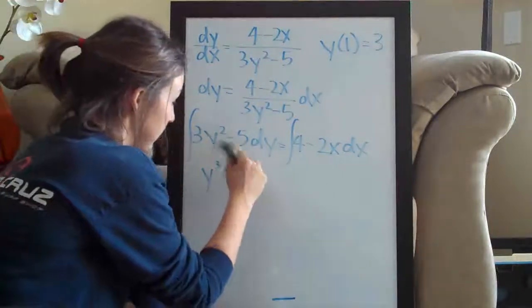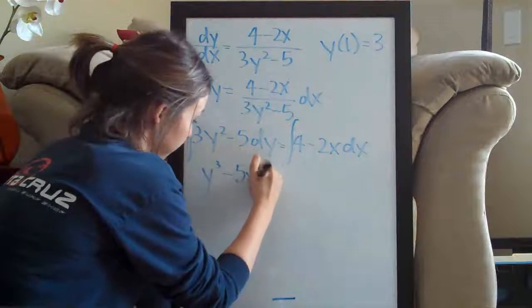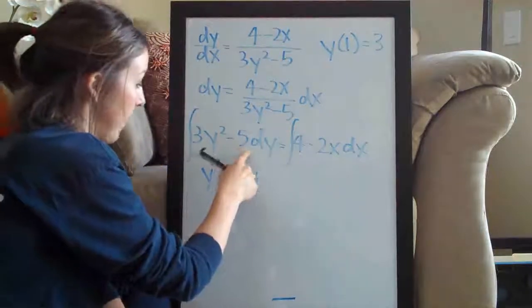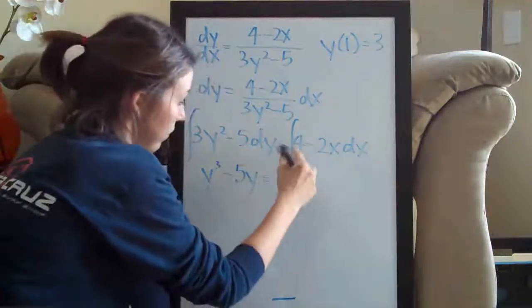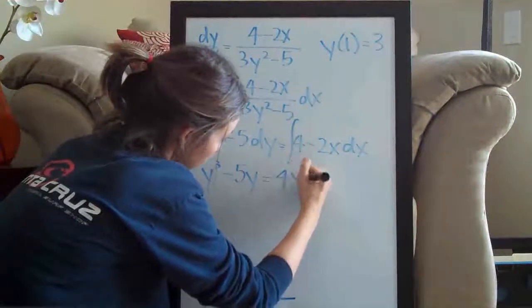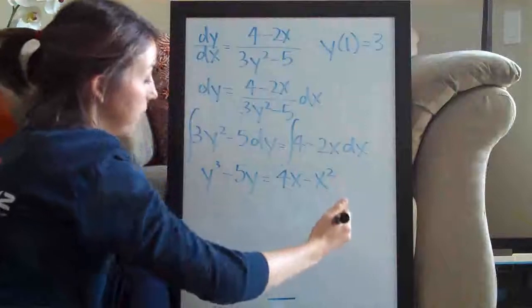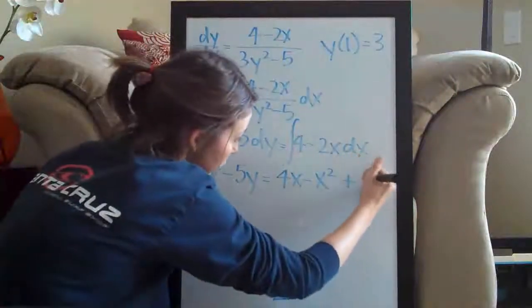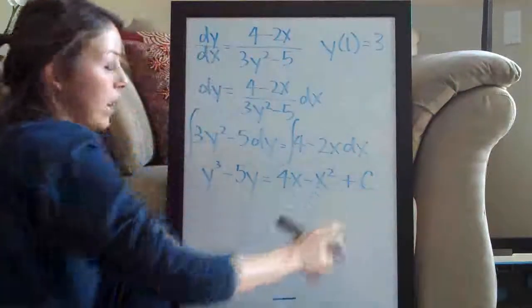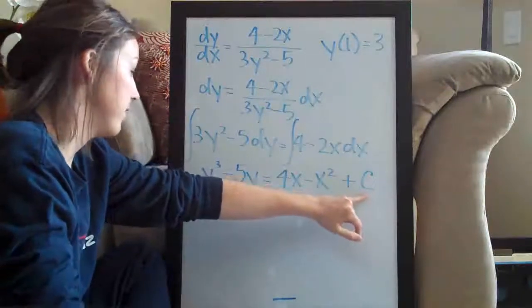So y cubed minus 5y is the integral of 5. On the right side we have 4x minus x squared is the integral there. And then don't forget to add c to the right side only. We add c to account for the constant.